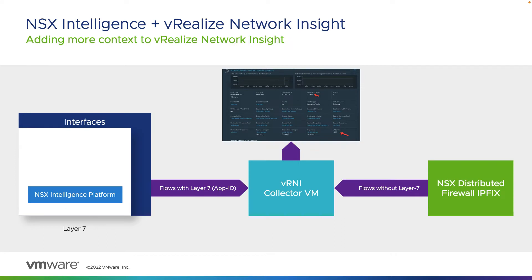When we look at the integration of NSX Intelligence with vRealize Network Insight, you'll see that the NSX distributed firewall is sending vRealize Network Insight's collector VM flows that do not have Layer 7 info. These are five-tuple flows that are shown as four-tuple flows within vRealize Network Insight. Since NSX Intelligence has a capability of doing DPI, we can now take flows with the Layer 7 application ID from NSX Intelligence and stream those into vRealize Network Insight via the collector.